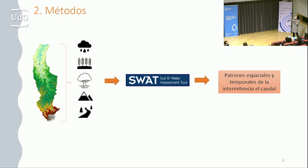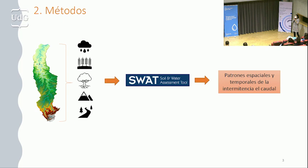¿Cómo lo hicimos? Primero, recolectamos toda la información disponible de la cuenca: datos meteorológicos de los últimos 20 años, datos de uso del suelo, tipos de suelo, elevación del terreno y también datos observados de caudal. Con toda esta información la procesamos y analizamos, y mediante el uso del modelo hidrológico SWAT creamos este modelo. Una vez obtuvimos el modelo local con una calibración y validación satisfactoria, calculamos con el caudal simulado de los últimos 20 años unos indicadores de la intermitencia del caudal que nos ayudarán a caracterizar precisamente estos patrones espaciales y temporales.